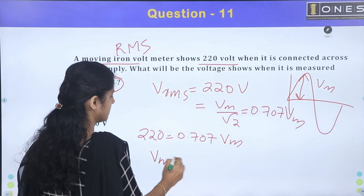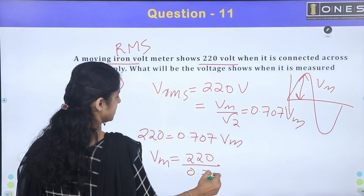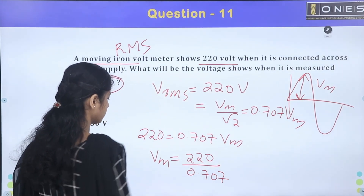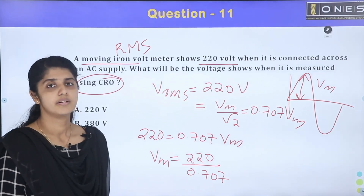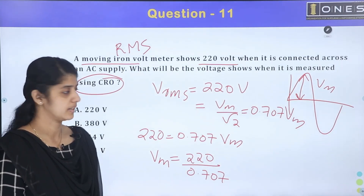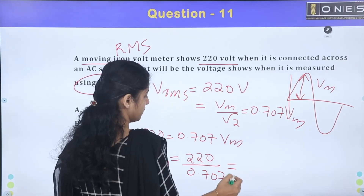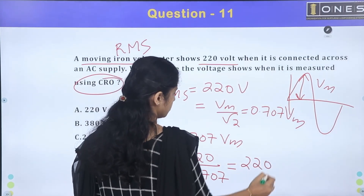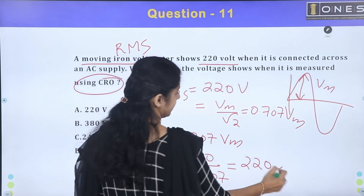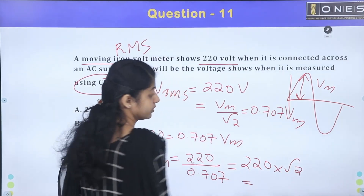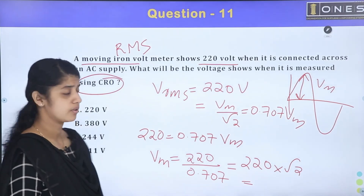The peak value Vm is equal to 220 divided by 0.707. Since 0.707 is 1 over root 2, this becomes 220 multiplied by root 2, which is 220 multiplied by 1.414.